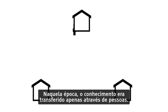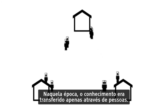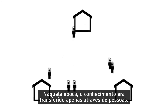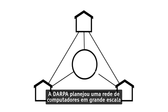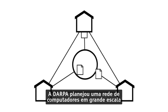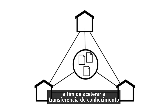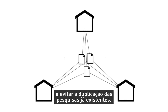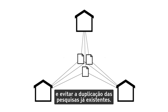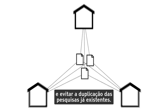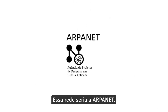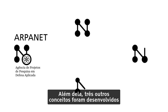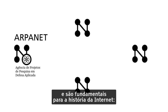At that time, knowledge was only transferred by people. DARPA planned a large-scale computer network in order to accelerate knowledge transfer and avoid the doubling up of already existing research. This network would become the ARPANET.